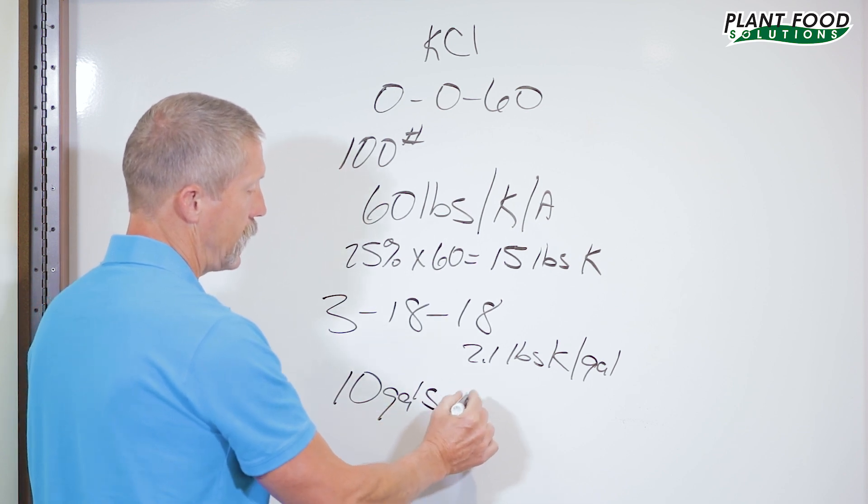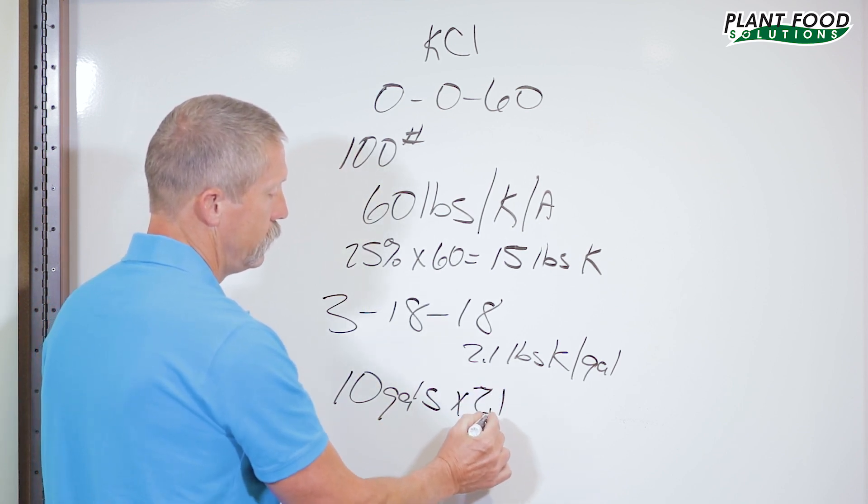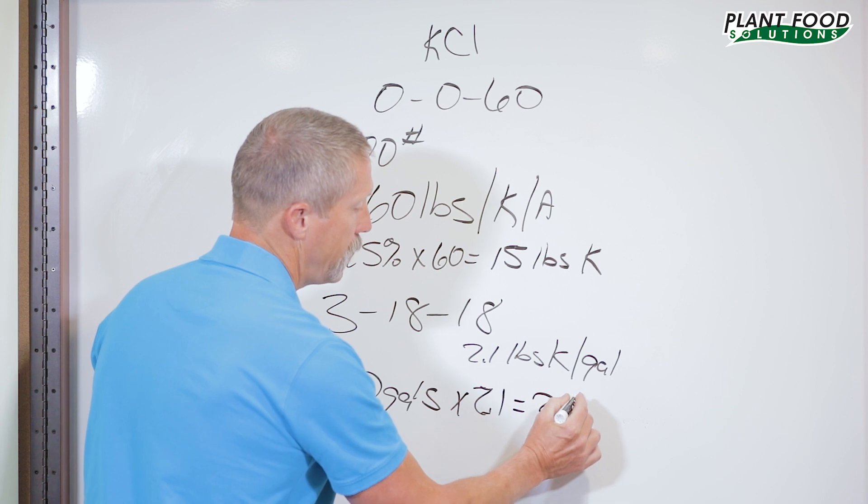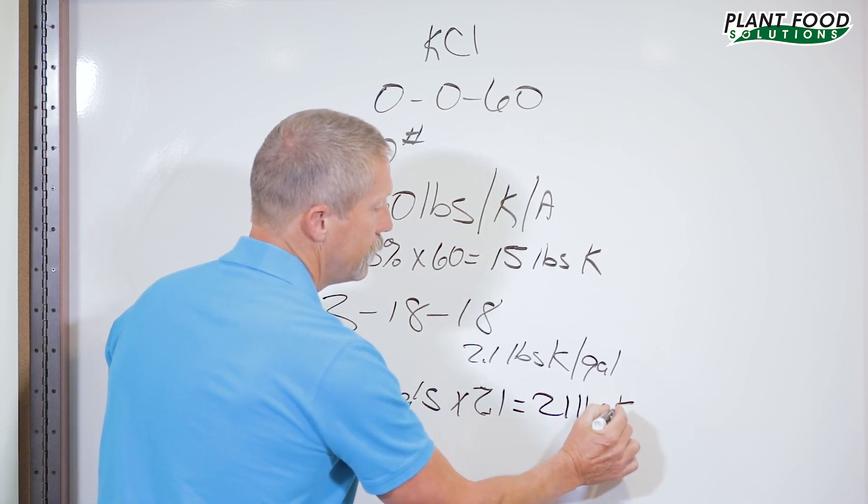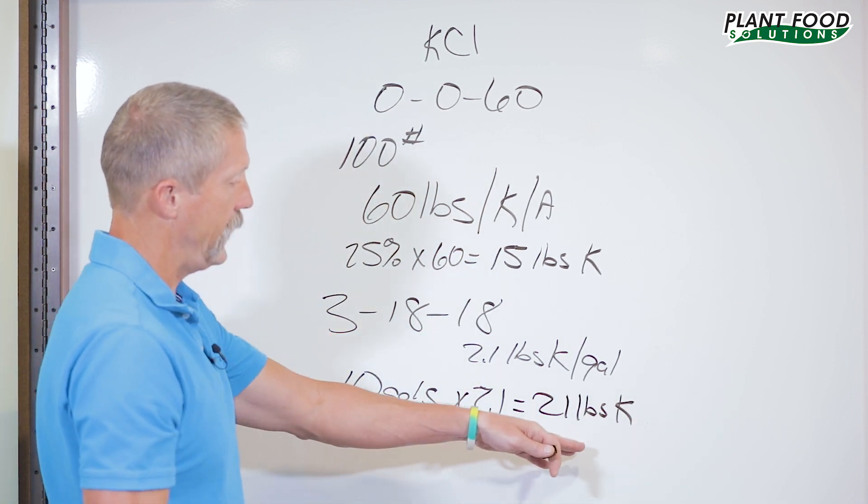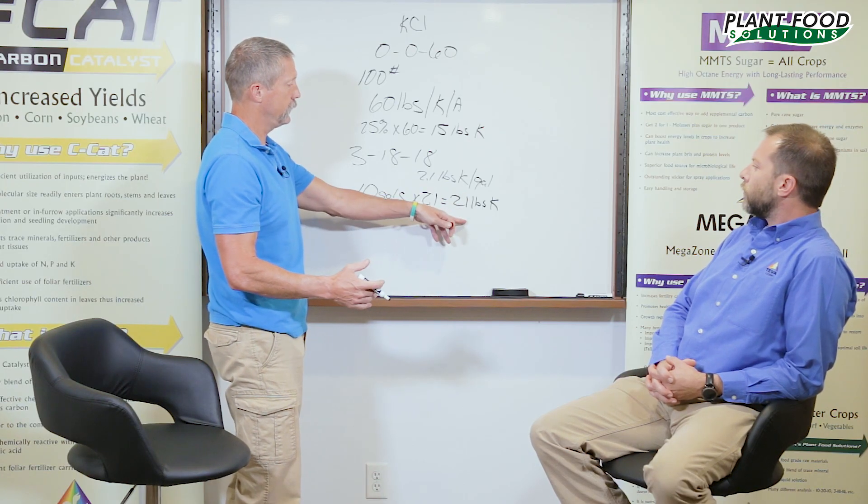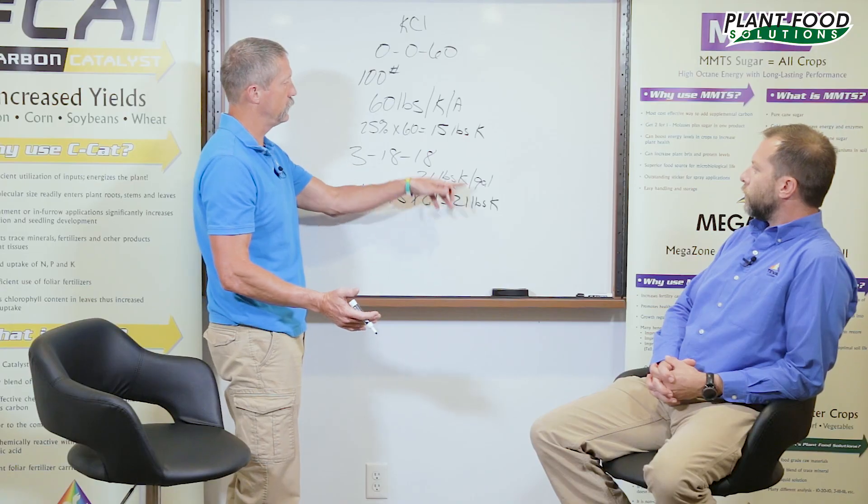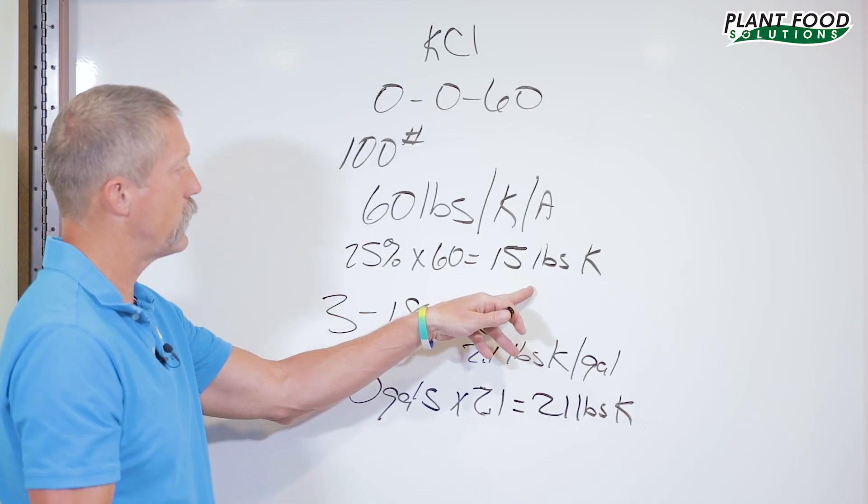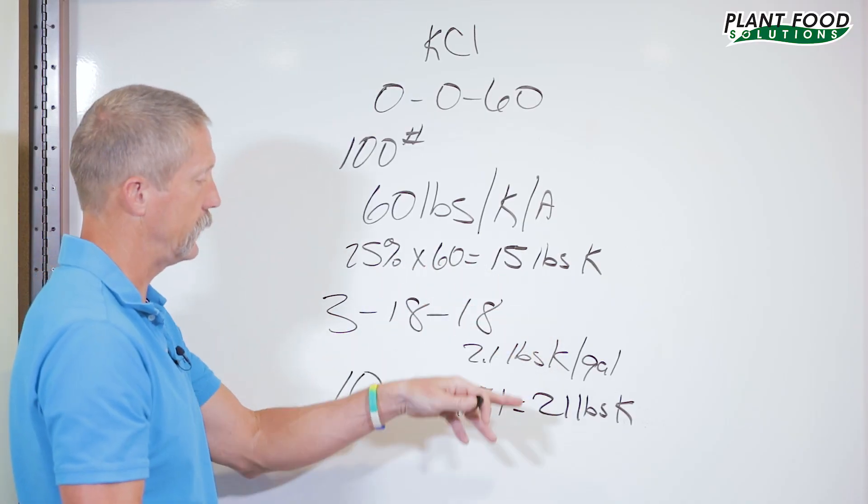If you do 10 gallons times 2.1, you'll see that you ended up with 21 pounds of K per acre. You're actually ending up with about six more pounds of actual K into the plant versus the hundred pounds of dry just because of the availability.